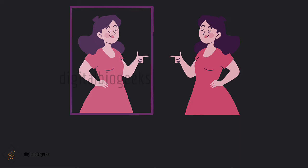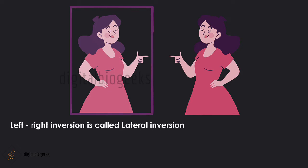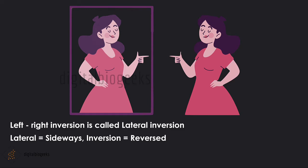If you stand in front of a plane mirror and raise your right arm, the image appears to raise its left arm. Have you wondered why the images we see in a plane mirror are left-right inverted? This left-right inversion is called lateral inversion. Lateral means sideways and inverted means reversed. Let's understand how this lateral inversion happens — does the mirror really flip things?